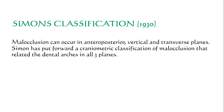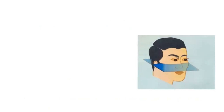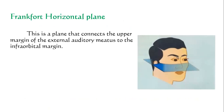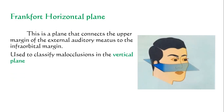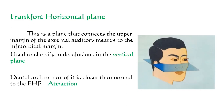Simon's classification relates to dental arches in all three planes. He introduced three reference planes: the Frankfurt horizontal plane, the orbital plane, and the mid-sagittal plane, and classified malocclusions based on these. The Frankfurt horizontal plane connects the upper margin of the external auditory meatus to the infraorbital margin, and is used to classify malocclusions in the vertical plane.